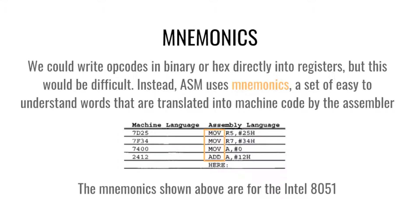When we talk about assembly we have to talk about things called mnemonics. Let's look at a real example: on the left side we have the machine code instruction and on the right side we have the assembly language equivalent. The first line is moving into register 5 (R5) the number 25 hexadecimal — just imagine converting 25 into an 8-bit number and moving that into register 5. That MOV is the mnemonic — a nice easy-to-understand word that stands for a machine code instruction.